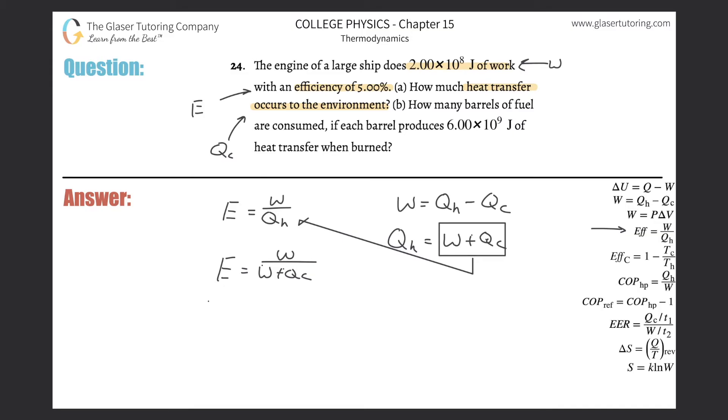Do that cross multiplication trick where the work plus Q_c equals the work over the efficiency. Then subtract the work from both sides, so Q_c equals the work over the efficiency minus the work.